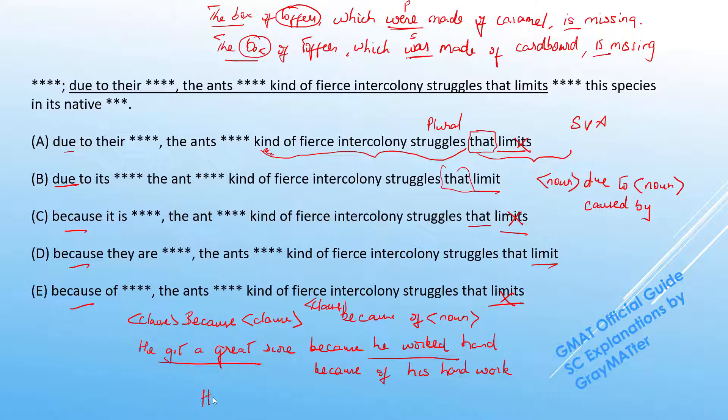We need a helping verb here to make this a proper sentence. So his great score was due to his hard work. So his great score is a noun phrase, and his hard work is also a noun phrase. And that's what due to should connect.